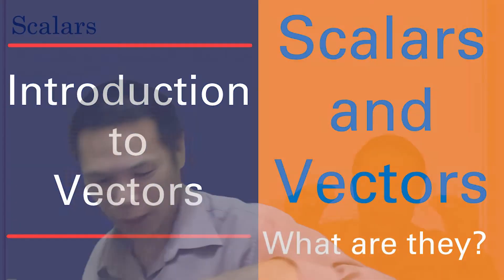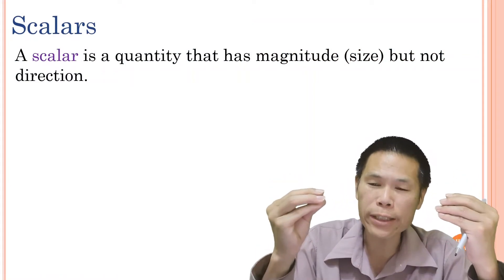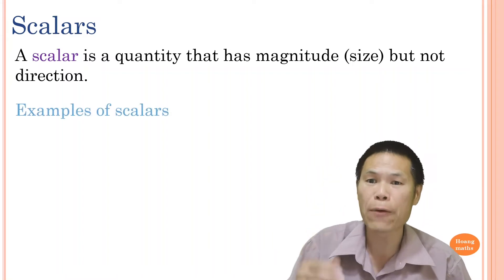Let's go straight into it. What is a scalar? A scalar is a quantity that has magnitude but not directions.